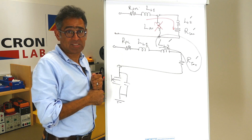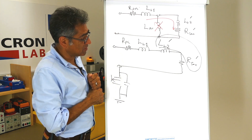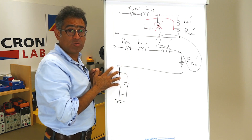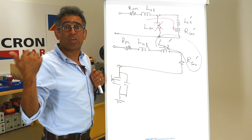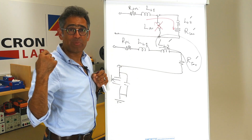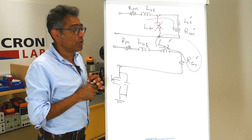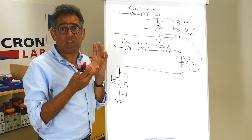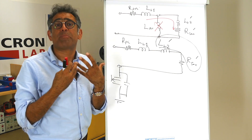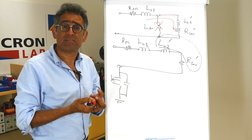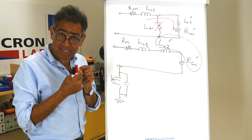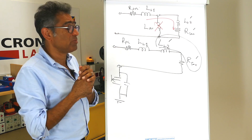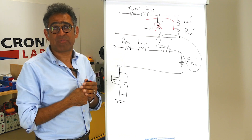Now that we know what we have to do, we can go to the lab and make measurements. I'm going to do an open circuit test on the transformer, which gives me the magnetizing inductance, and then I'm going to do a short circuit test — shorting the secondary — which gives me the total leakage as seen on the primary.